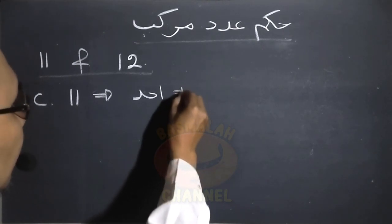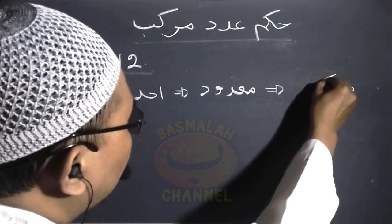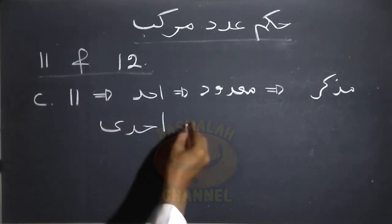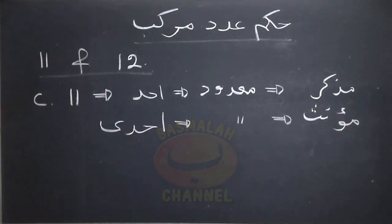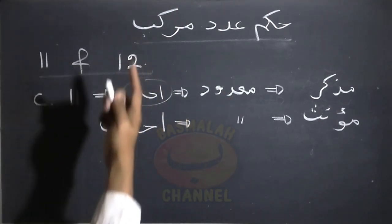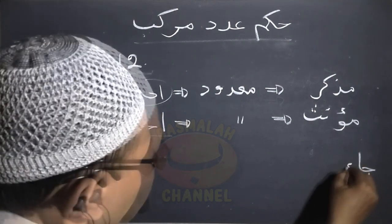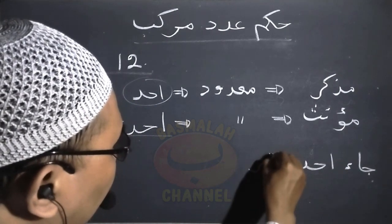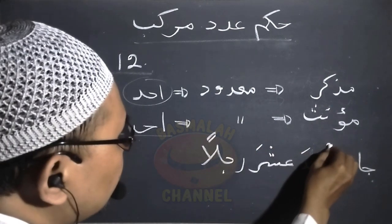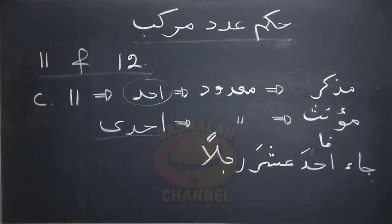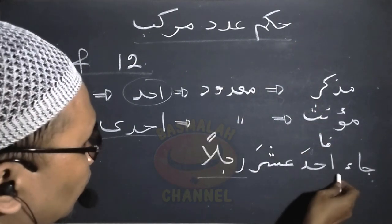Kemudian ketentuan yang selanjutnya adalah untuk adat yang berupa bilangan sebelas, satuannya akan berupa lafaz Ahadah manakala makdudnya berupa makdud yang berjenis mudakar, dan menggunakan lafaz Ihadah manakala makdudnya berupa mu'anas. Jadi apabila makdudnya mudakar maka menggunakan Ahadah, manakala makdudnya mu'anas menggunakan lafaz Ihadah. Contohnya seperti lafaz: Ja'a Ahadah Ashara Rojulan — datang sebelas orang laki-laki.